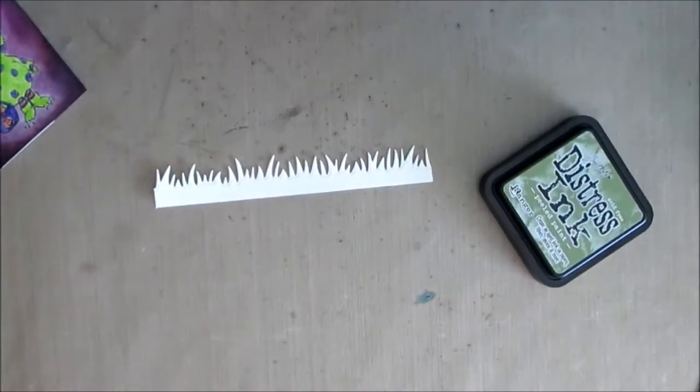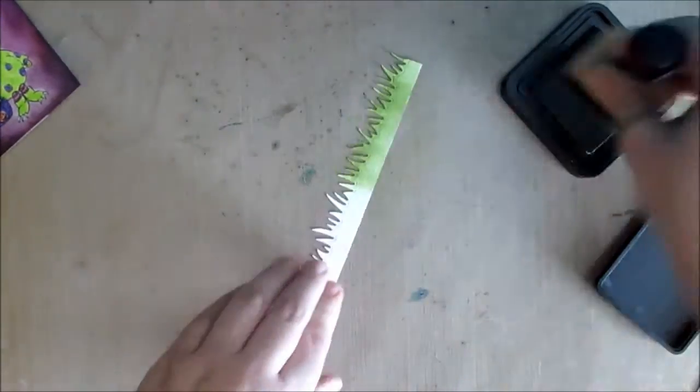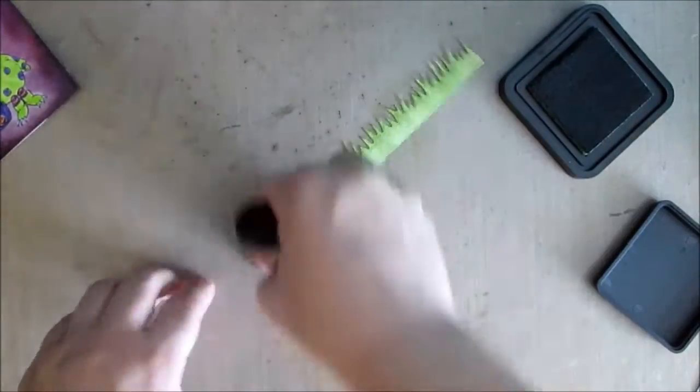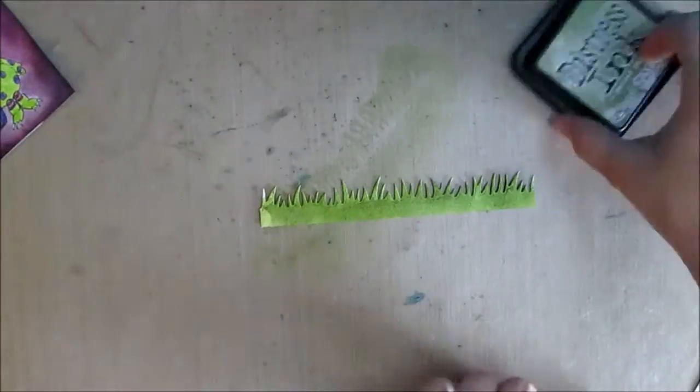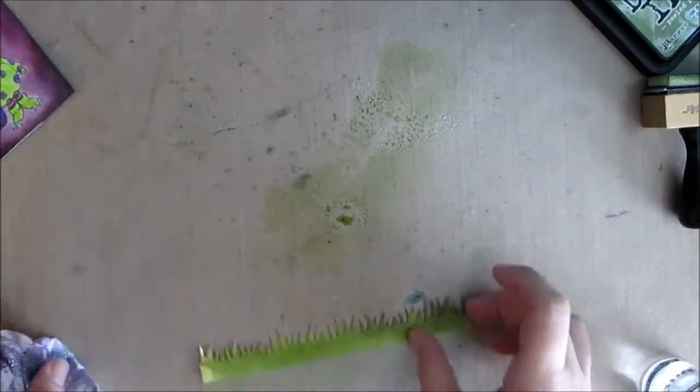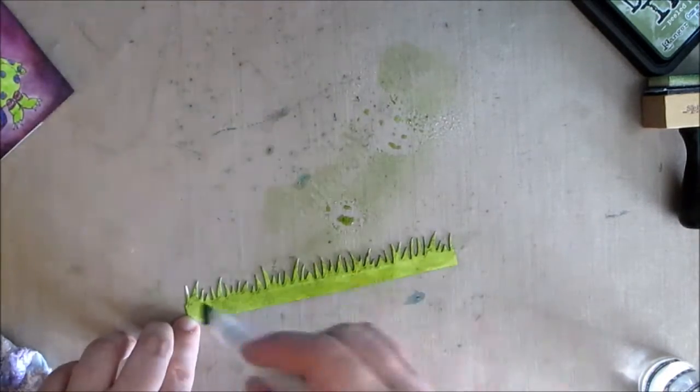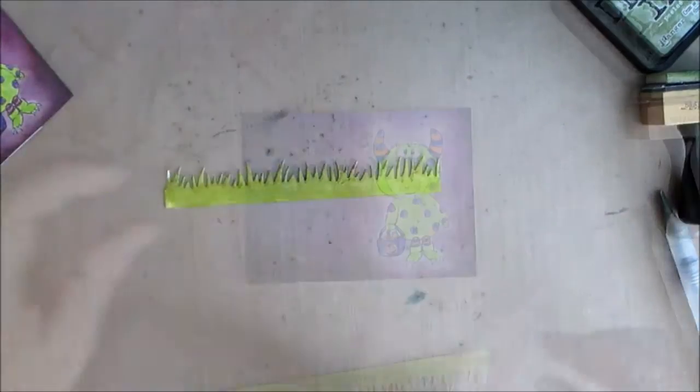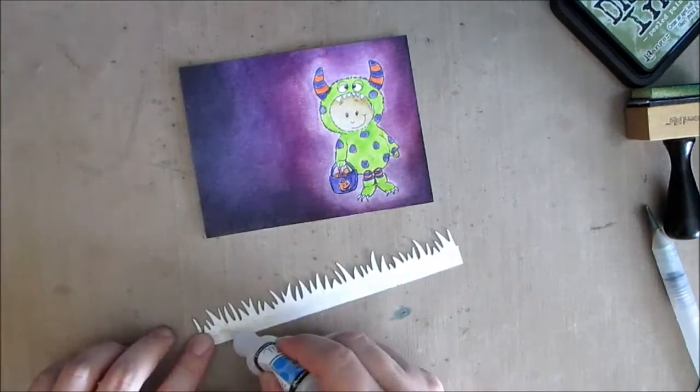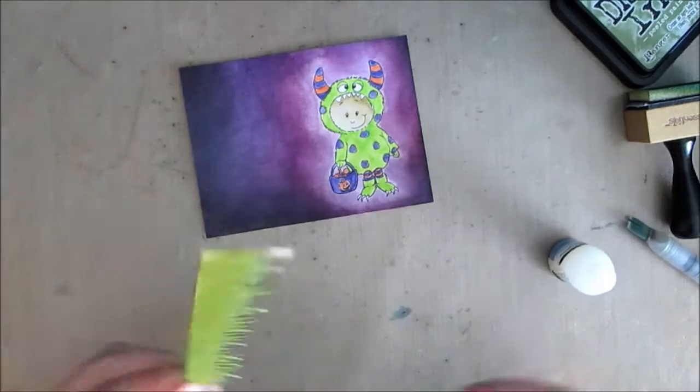Now I want to add some grass and I have that Lawn Fawn Lawn Cuts Grassy Borders die. I just want to add my own custom color to it with this Peeled Paint Distress Ink. I'm just dabbing it on like I had done previously with the night sky panel and I want it to be kind of dark so I'm just kind of putting a little on, spreading it out with the water brush and cleaning everything up. Then I will be using some matte accents to glue it on because this is a thick paper. I want to make sure that I use a really strong adhesive.